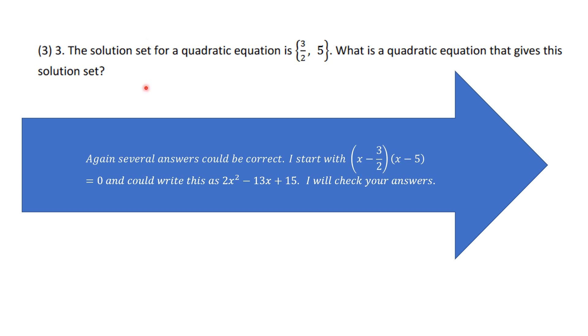Number 3, what happens is the solution set for the, you're trying to find, come up with a quadratic equation where the solution is 3 over 2 and 5 and it asks what quadratic equation gives this a set. Again, several answers could be correct, but you see it has to be the product of these two factors has to equal 0. And this could be written a number of ways, and I will check your solution.